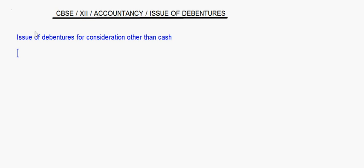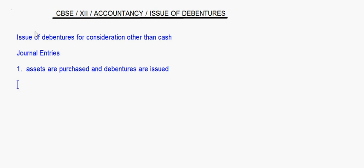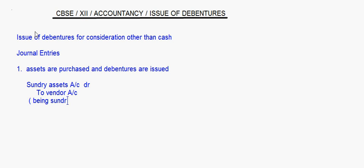Let's look at the journal entries. First, when assets are purchased and debentures are issued, we will have sundry assets account debited to vendor account. Supposing machinery is purchased, we will write machinery account debit to vendor account — being sundry assets purchased.